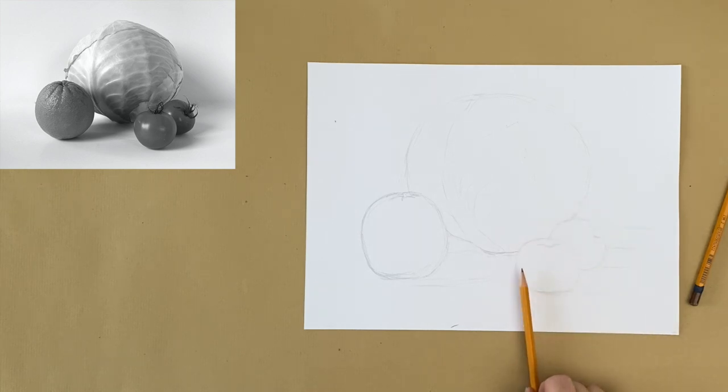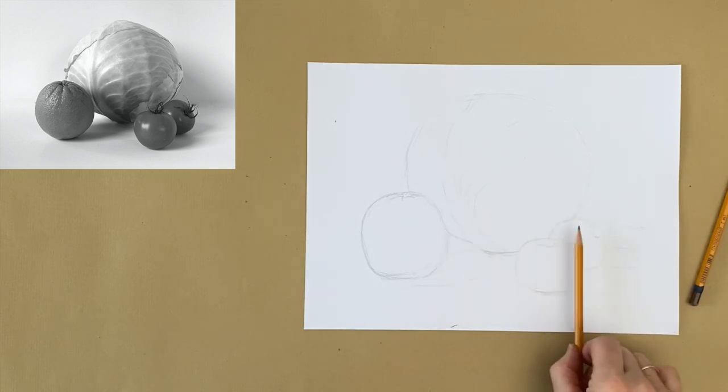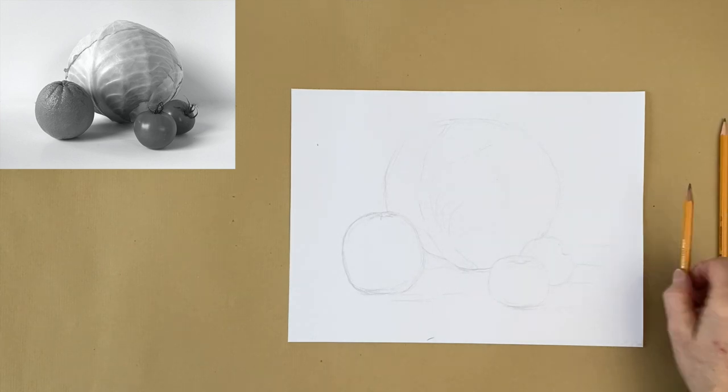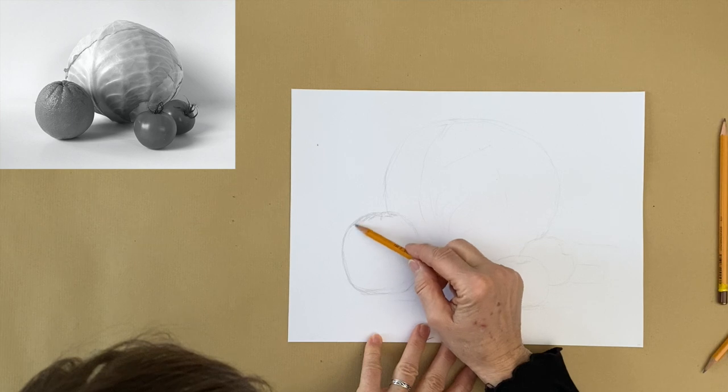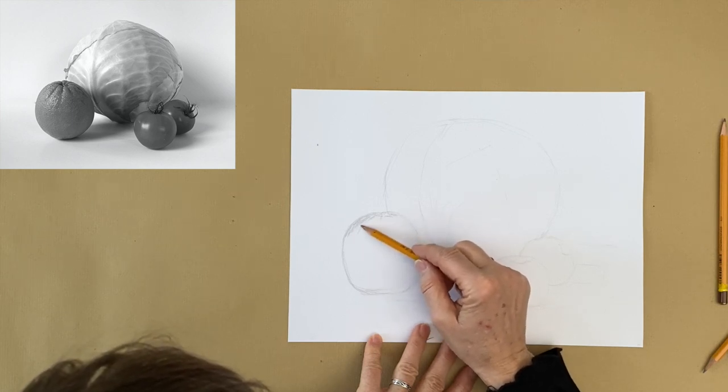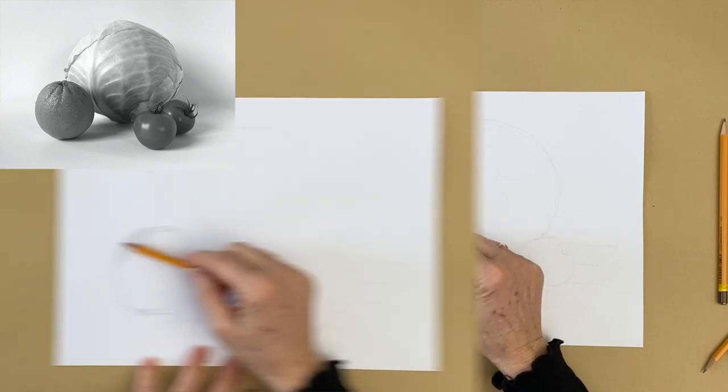And the tomatoes of course are very dark. The orange too is on this side a little lighter, a little darker here. And the cabbage is fairly light. So this is the first step. And I'm going to let you watch without further commenting it. Because I think everything you need to know will become clear while you watch me do it.